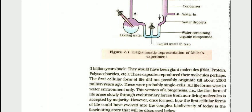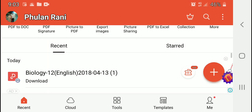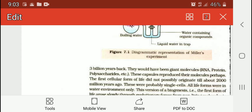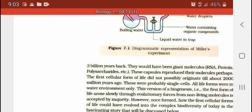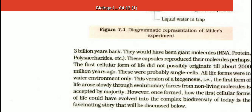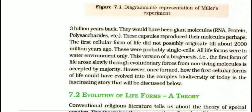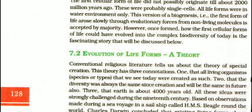The first cellular form of life did not probably originate till about 2,000 million years ago. The first life forms were single cells. Blue-green algae, or cyanobacteria, were reported on the earth as single-celled organisms. In the next lecture, we will do the evolution of life forms.